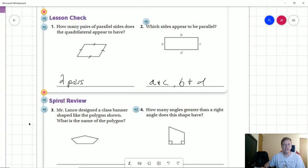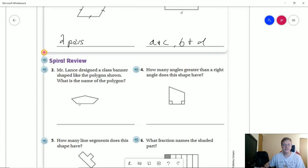For number three, the name of this polygon is going to be based on the number of sides it has. It has five sides, so that would be a pentagon.